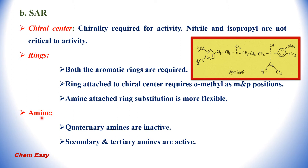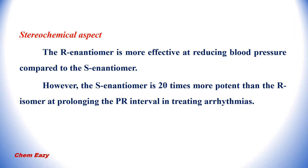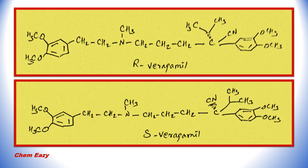Regarding the amine: if there is a quaternary amine the drug becomes inactive, but secondary or tertiary amines are active. In the stereochemical aspect, comparing R- and S-enantiomers, the R-enantiomer of verapamil is more effective at reducing blood pressure compared to the S-enantiomer. However, the S-enantiomer is 20 times more potent than the R-isomer at prolonging the PR interval in treating arrhythmias. The PR interval is the first part of the electrocardiogram wave.